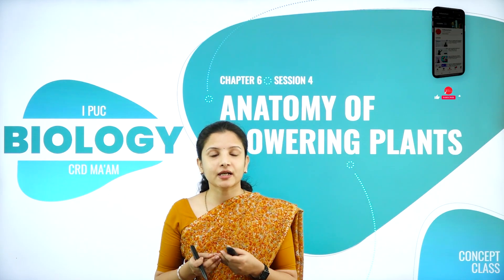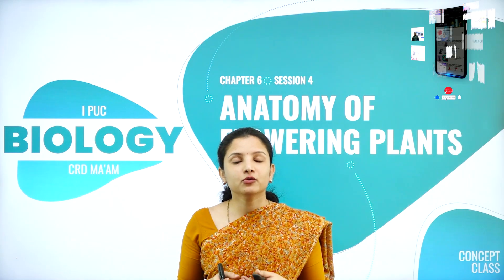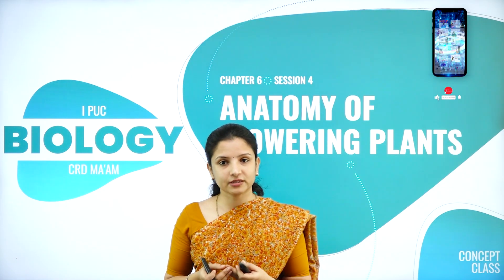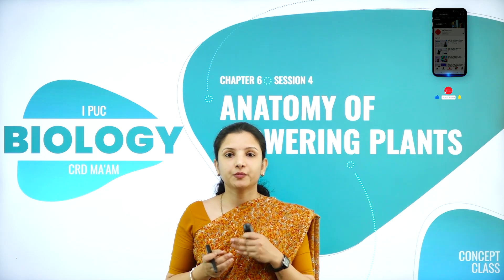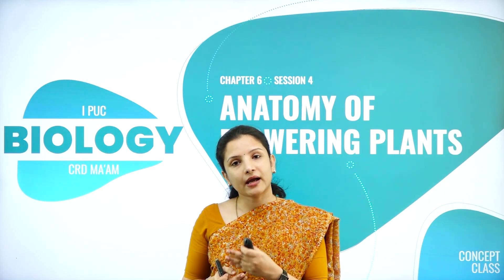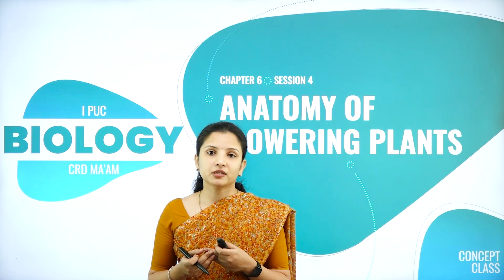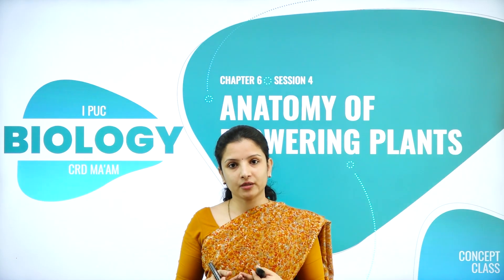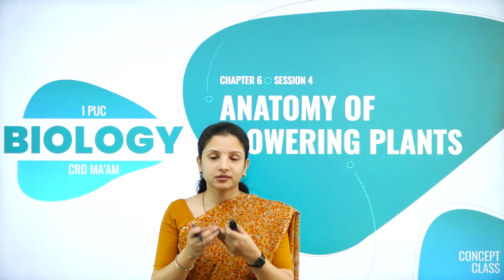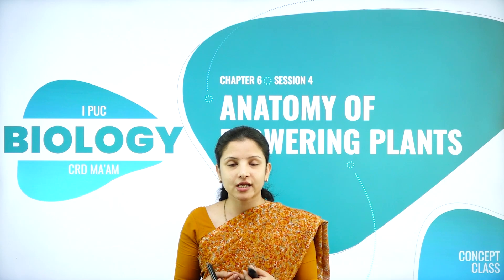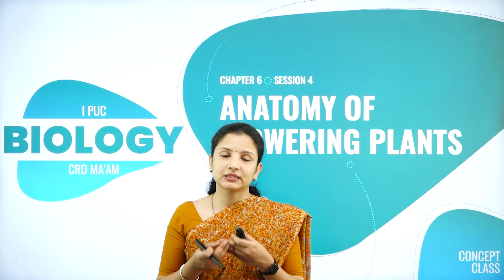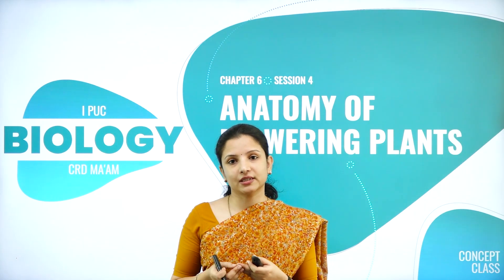In the previous session, we had studied about the permanent tissues, wherein we learned that permanent tissues include simple permanent tissues and complex permanent tissue. Under simple permanent tissue, we studied about the collenchyma, sclerenchyma, and parenchyma. Under the complex permanent tissue, we studied about the xylem and the phloem, which form the vascular bundle, including the shapes, wall composition, and function of each cell.